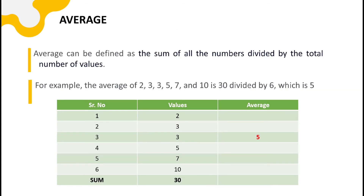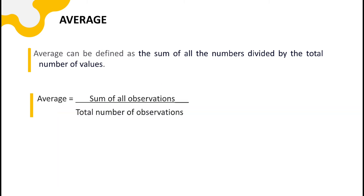Coming to the next concept: average. Average is defined as the sum of all the numbers divided by the total number of values. For example, to determine the average of 2, 3, 3, 5, 7, and 10 — there are 6 values. We determine the sum of all these values, which is 30, and divide by the number of values, which is 6. So 30 divided by 6 is 5. The average of this set is 5, calculated as: sum of all observations divided by total number of observations.